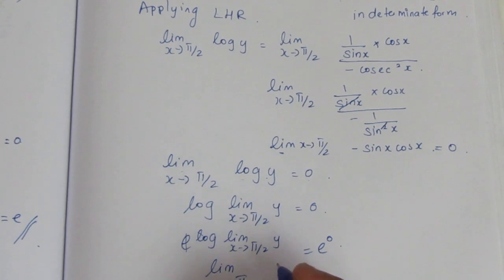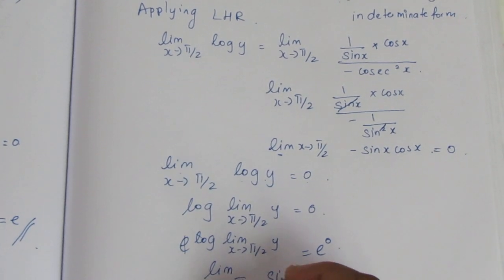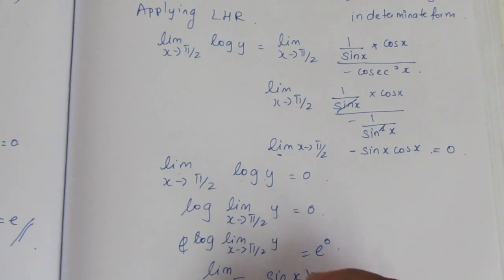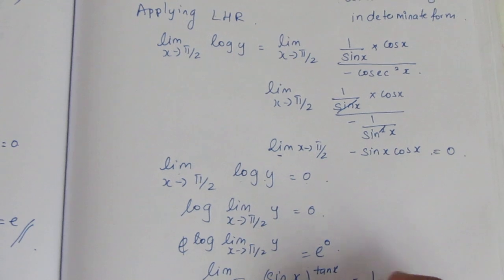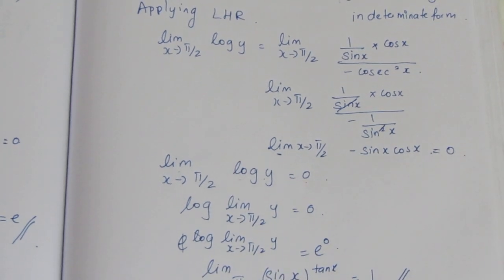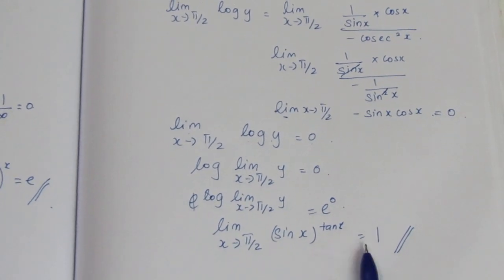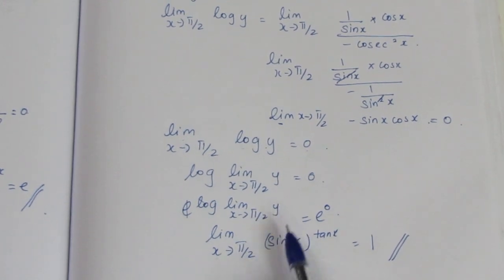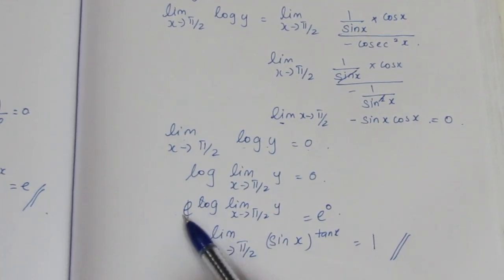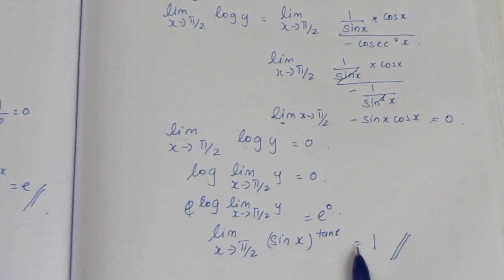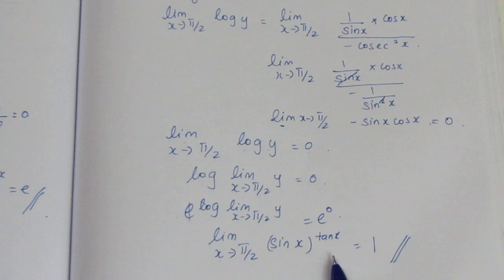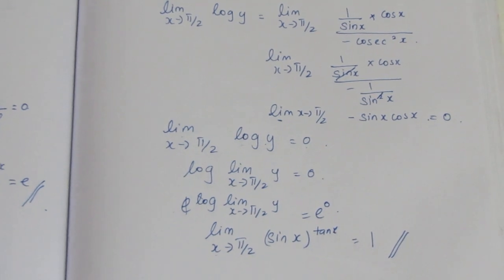Then limit x tends to π/2, y equals e to the power 0, which equals 1. So this is the answer to this sum: the limit equals 1.